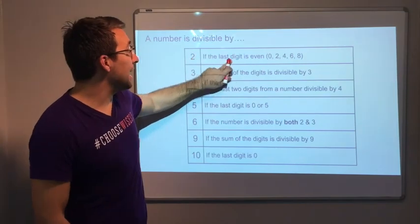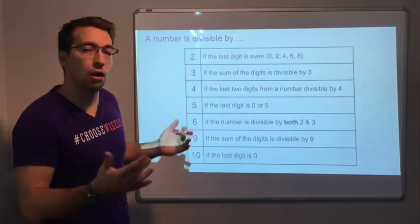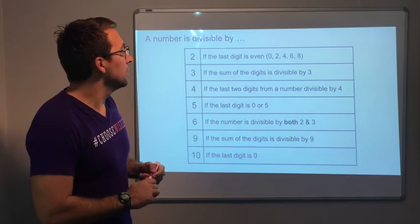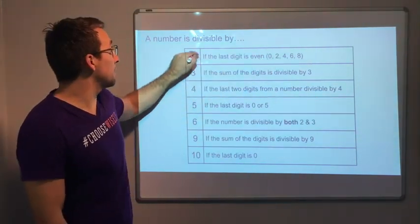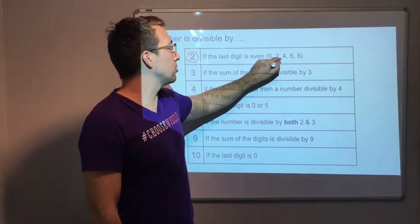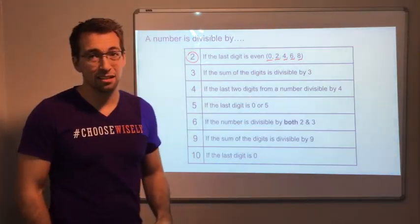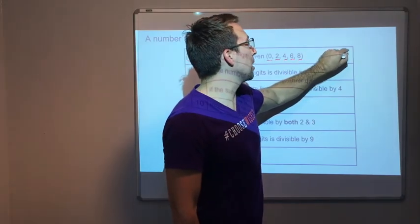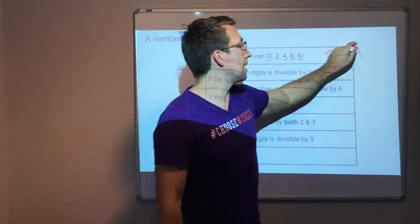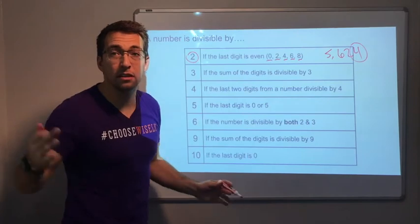If the last digit is even, you can divide it by 2. Makes sense, right? If the last digit is even, you can divide it by 2. Because look, even numbers: 0, 2, 4, 6, 8. So it doesn't matter. If the number is 5,624, the last digit is 4. It's even. You can divide it by 2.